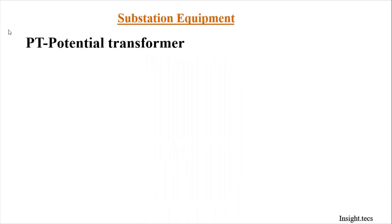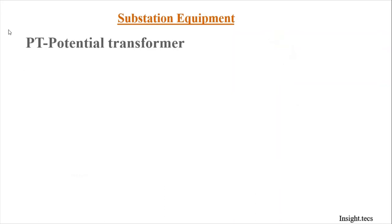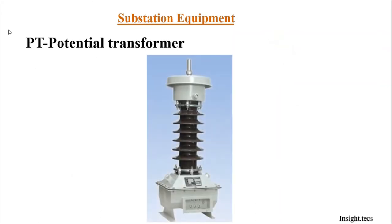The next component is the potential transformer (PT). The symbol of the potential transformer is as shown here. A PT is used for measurement of voltage in metering and for protection in the power system. It transforms voltage from one winding to another and provides input to meters and protection systems. The PT has ratios like 11/√3 to 110/√3 — if the primary voltage is 132 kV, the secondary voltage will be 110 V.